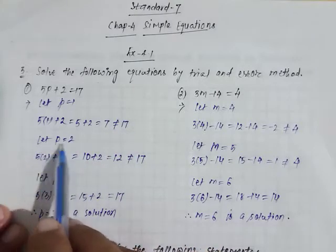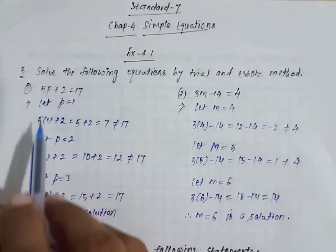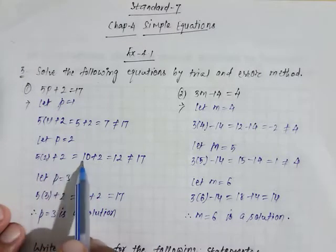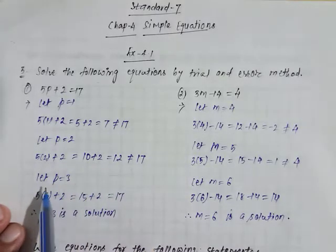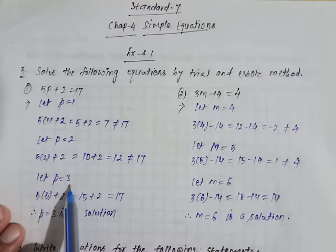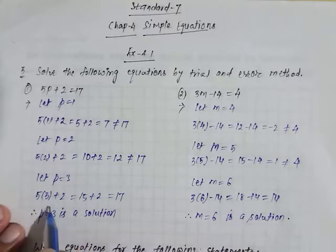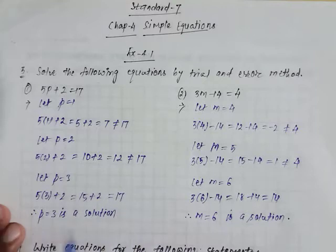Now let p is equal to 2. This is 5 into 2 plus 2. 5 times 2 is 10 plus 2 equals 12, that is not equal to 17. Now let's say that p is equal to 3, so it becomes 5 into 3 plus 2 equals 15 plus 2 equals 17. So we can say that p equals 3 is the solution of the given equation.